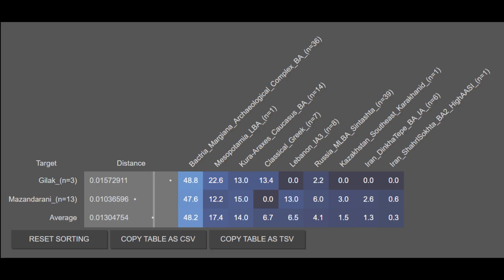The Gilakis and Mazandaranis are on average 48.2% BMAC Bronze Age, 17.4% Mesopotamian Late Bronze Age, 14.4% Kura-Araxes Caucasus Bronze Age, 6.7% Classical Greek, 6.5% Phoenician, 4.1% Sintashta, 1.5% Karakhanid, 1.3% Dinkatepe Bronze Age, and 0.3% Shahr-e Sokhteh. These results show that the Gilakis and Mazandaranis are mostly of BMAC descent, with elevated Mesopotamian and Caucasian ancestry — though the Mesopotamian ancestry is very similar to the Dinkatepe ancestry and partly acts as a proxy for it. Both populations display a great degree of genetic continuity despite their small amount of Steppe or Indo-European ancestry.